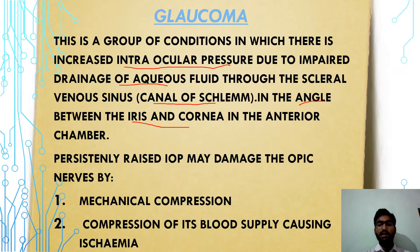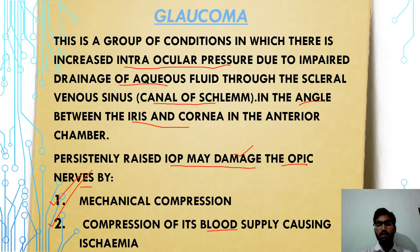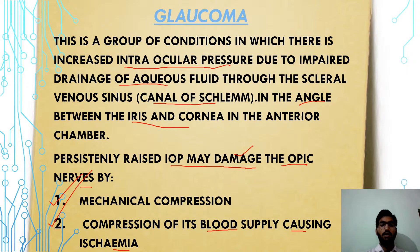Increased IOP causes optic nerve damage through two conditions: one is mechanical compression of the optic nerve, and the other is compression of its blood vessels. Because of the elevated IOP, ischemia occurs in the cells of the blood vessels. The canal of Schlemm becomes blocked, impairing the drainage of aqueous fluid, which leads to the glaucoma condition.